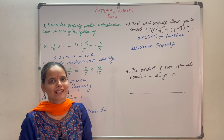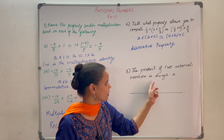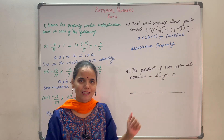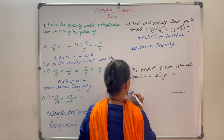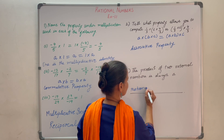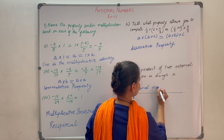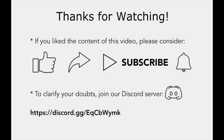Let us now discuss the third question. The product of two rational numbers is always a rational number. That is correct.